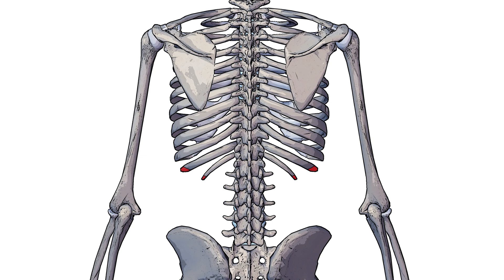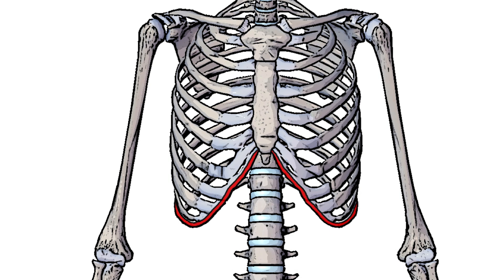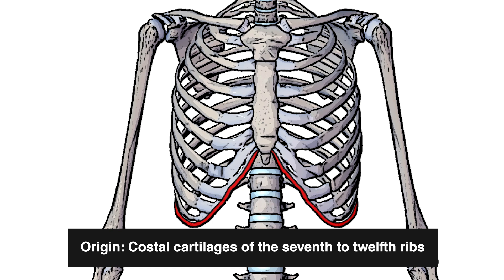Going back to a skeletal view, we can see the 11th and 12th ribs, with the points where the transversus abdominus connects marked out in red. But it's not just the 11th and 12th ribs posteriorly — the transversus abdominus wraps around the body, and on the anterior view you can see it also originates from the costal cartilages of the 7th to the 10th rib. So it's originating from the costal cartilages of the 7th to 12th ribs.